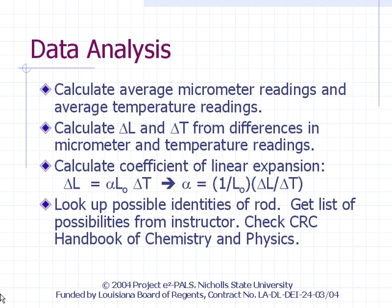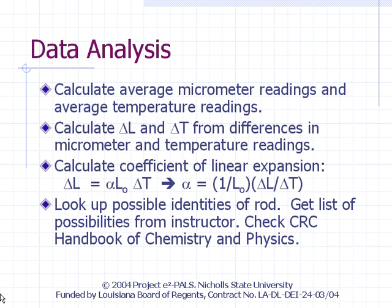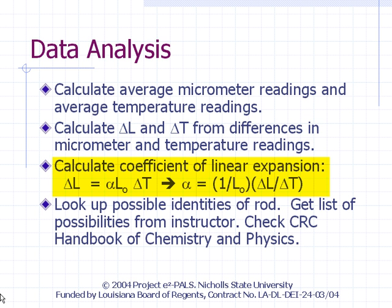Analysis of your data is straightforward. Calculate the average micrometer and temperature readings that you recorded at room temperature and near 100 degrees Celsius. From these average readings, calculate the change in length delta L and the change in temperature delta T. Then calculate the coefficient of linear expansion from your data. Since delta L equals alpha times L₀ times delta T, we can calculate alpha as one over L₀ times delta L over delta T.